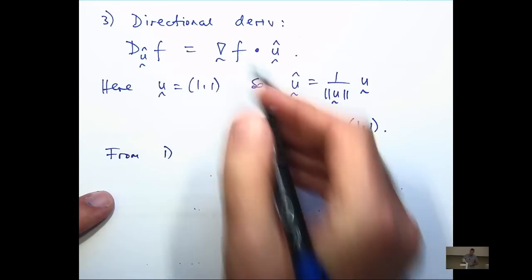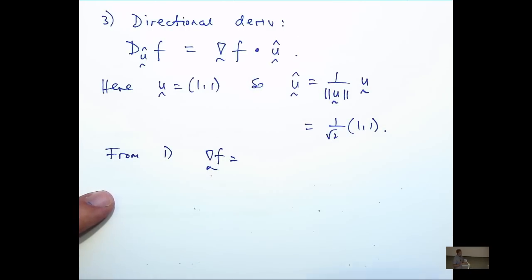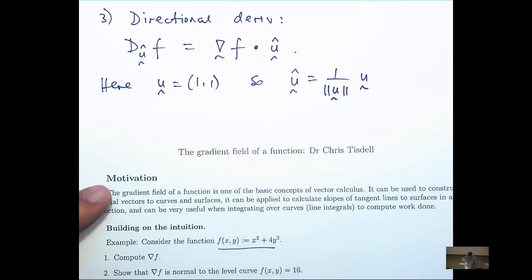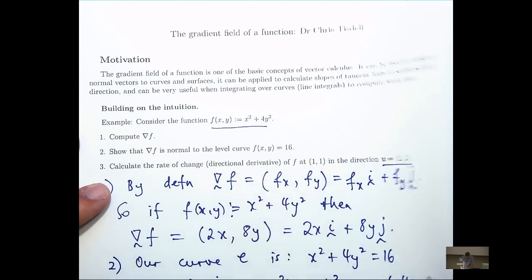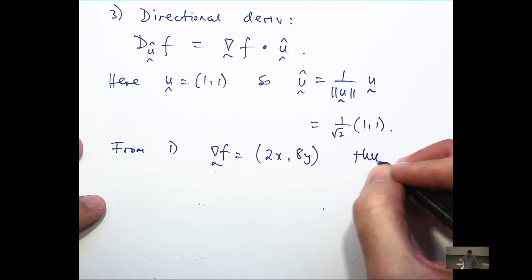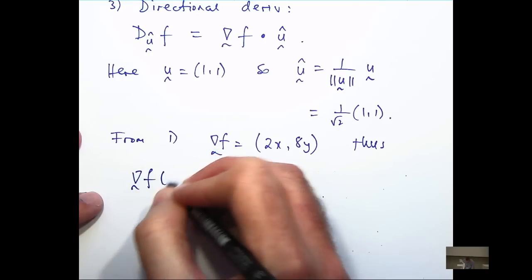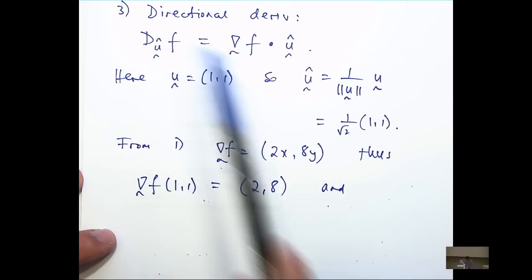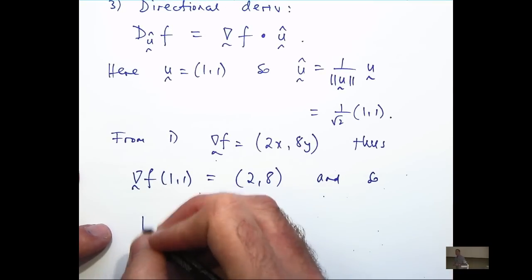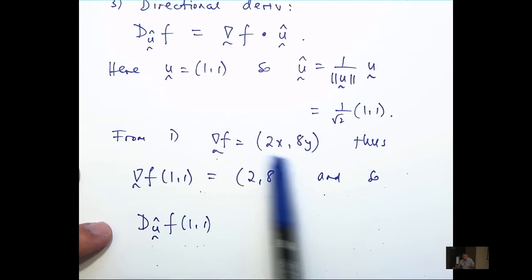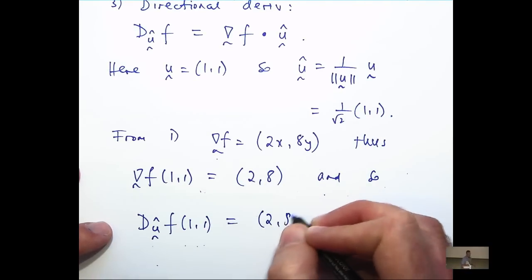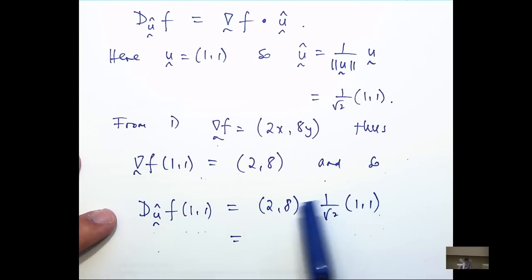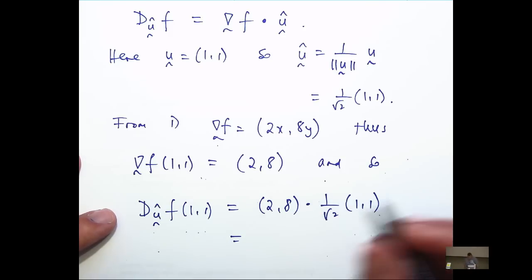From part 1, we already have this. It was 2x, 8y. And what we're interested in is computing the directional derivative at a certain point, (1,1). So let's compute this at the point (1,1). We'll get this. And so the directional derivative at our point of interest is just the dot product of this with this. So dot product, multiply the components. So 2 times 1 plus 8 times 1, add them together. So we're going to get the following.